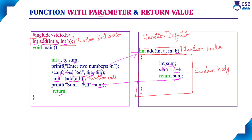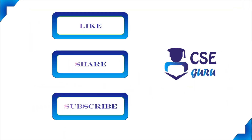If you understand these four categories along with their logic properly, then we can implement any program using a function under any one of these categories. In the next session, we will move on to the topic of what is an actual parameter and what is a formal parameter — we will discuss it in detail. Thank you for watching this video.